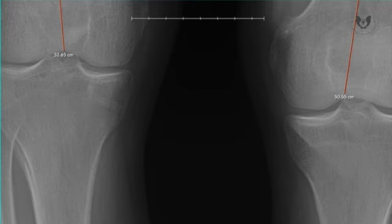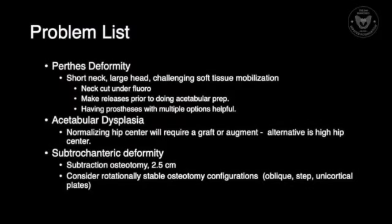My thoughts in the form of a problem list. We know we're dealing with a Perthes deformity, which classically leads to challenges as it relates to soft tissue mobilization, challenges in terms of getting the neck cut right, and challenges in terms of lengthening and offset recreation in a somewhat deformed proximal femur.